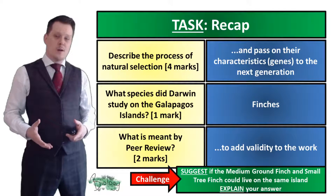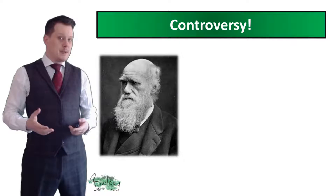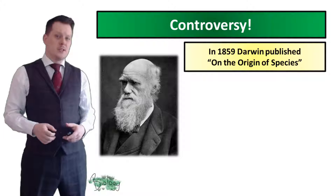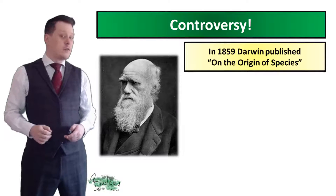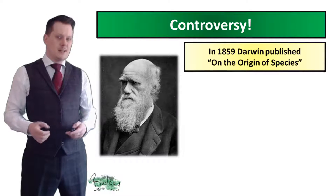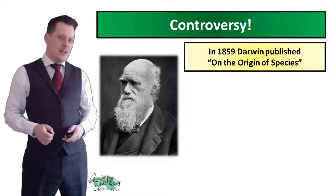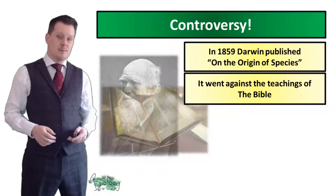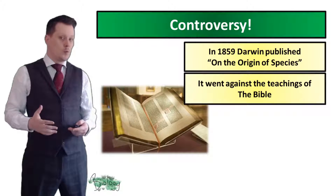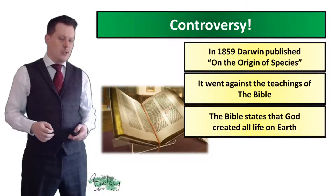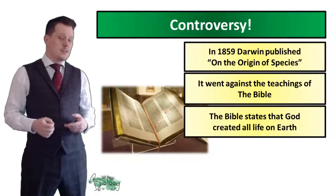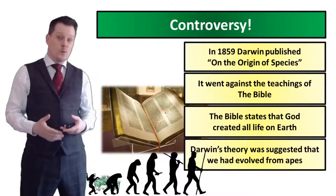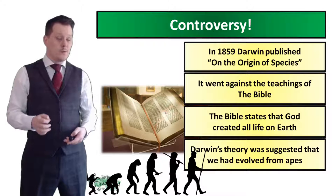Darwin and Wallace's theory did cause a bit of controversy. In 1859, Darwin published On the Origin of Species, which outlined his theories of natural selection and evolution. But this work went against the teachings of the Bible, which states that God created all life on earth. So the theory was rejected for quite a long time, because Darwin's theory suggested that we have evolved from apes.